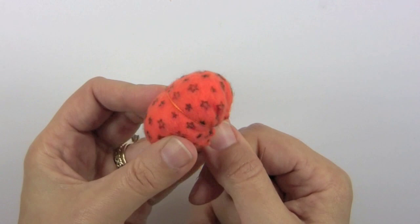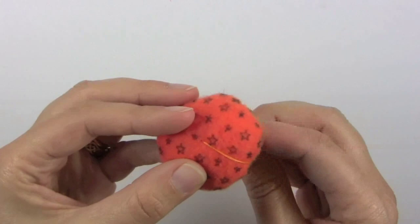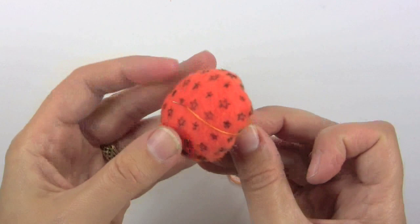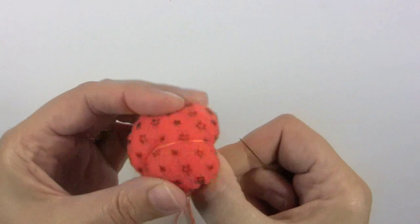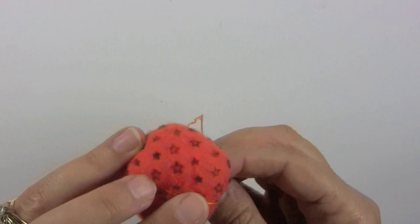Then wrap the thread around the side like that and poke it back through the middle down and have it come down through the bottom again in the same place where you made the last stitch. There's one ridge.